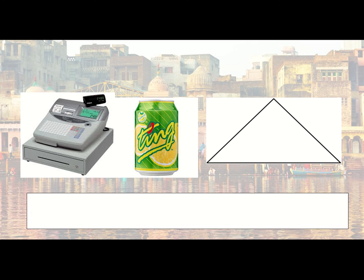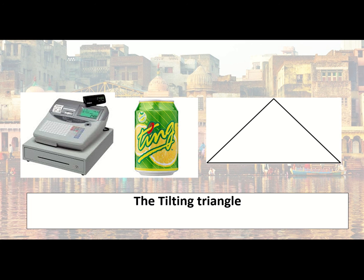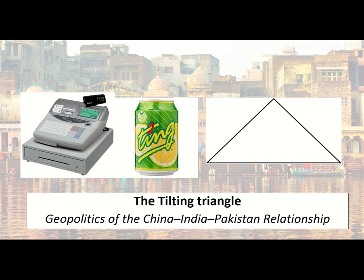Okay, I'm going to reveal it now. This is the Tilting Triangle. By the way, if you've never tried Ting stuff, it's so nice — like grapefruit fizzy drink, it's really tasty. So the Tilting Triangle is the name given to the specific geopolitics between China, India, and Pakistan — the geopolitical relationships between those three countries. Make sure you've got that written down as well. It's always good to use and include this in essays if they're asking you about geopolitics.